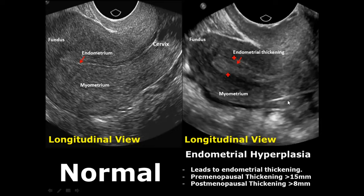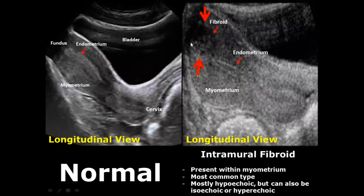Endometrial hyperplasia is the abnormal thickening of the endometrial glands leading to endometrial thickening. In premenopausal women, if the thickening exceeds 15 mm it is considered endometrial hyperplasia. In postmenopausal women, if the thickening exceeds 8 mm it is also considered endometrial hyperplasia.